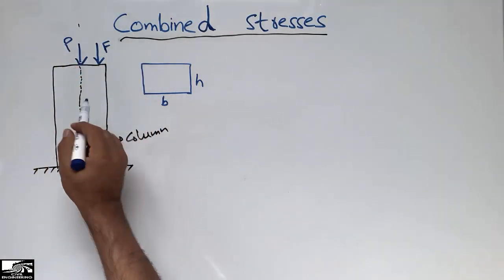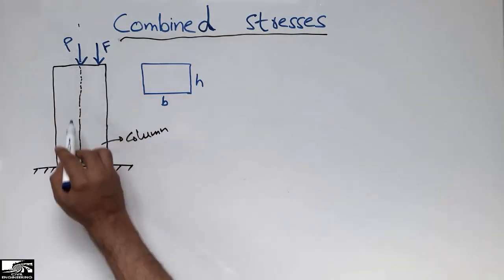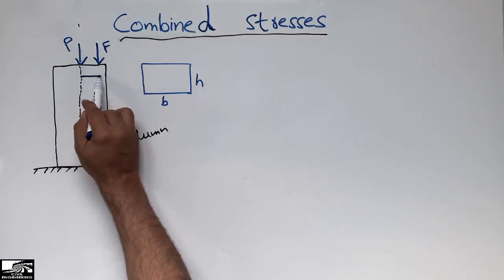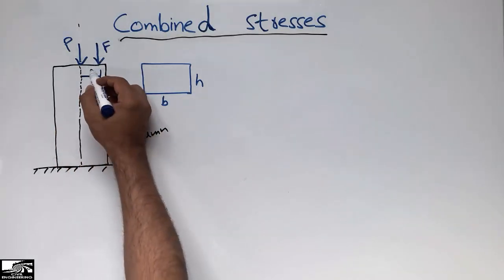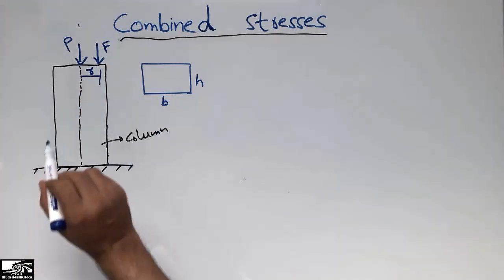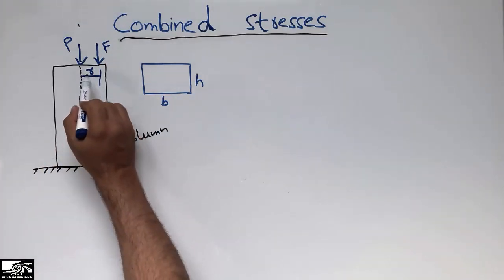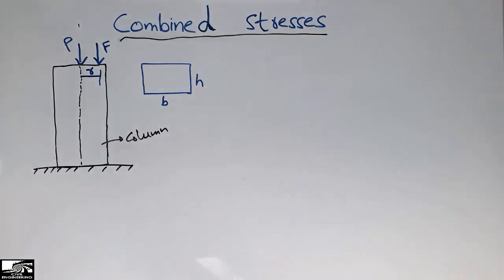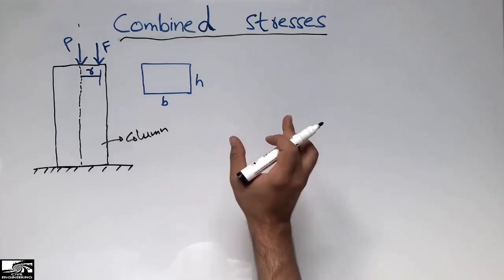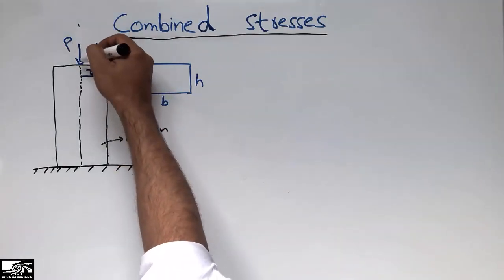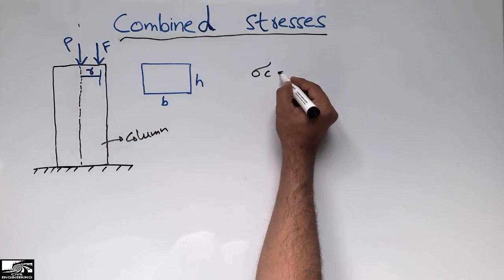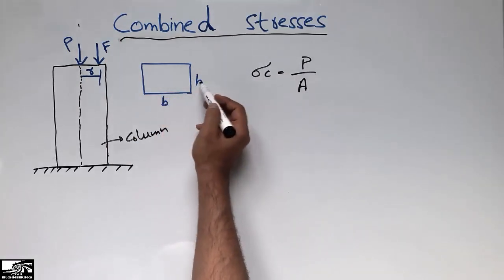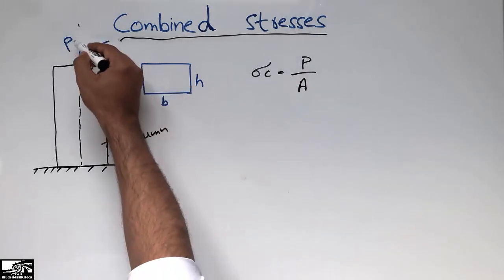Because the load F is not acting along the centroid of the column — it is away from the centroid — we have some eccentricity in this loading, which creates bending. The distance from the centroid to the eccentric load is represented by R. So we have two types of stresses: compressive stress due to the axial load P, which is P over A, where A is the cross-sectional area (B times H).